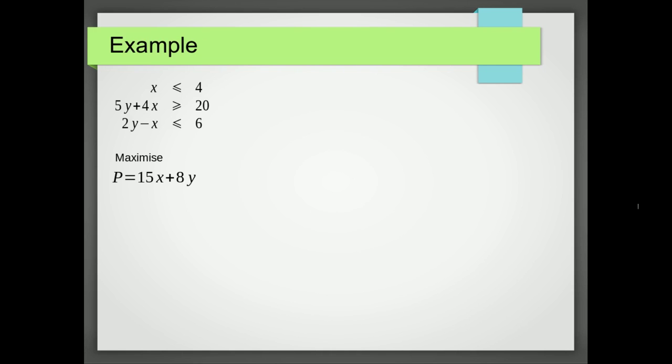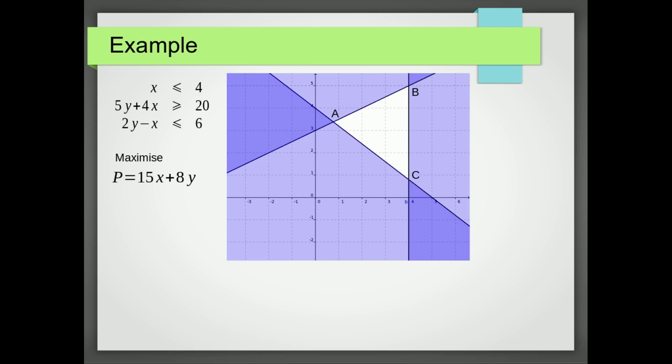So here is an example problem. We have our constraints, the three inequalities, and the objective function that we wish to maximise. So the first step is to construct the feasible region, which we did in the previous tutorial, and we've got it here.